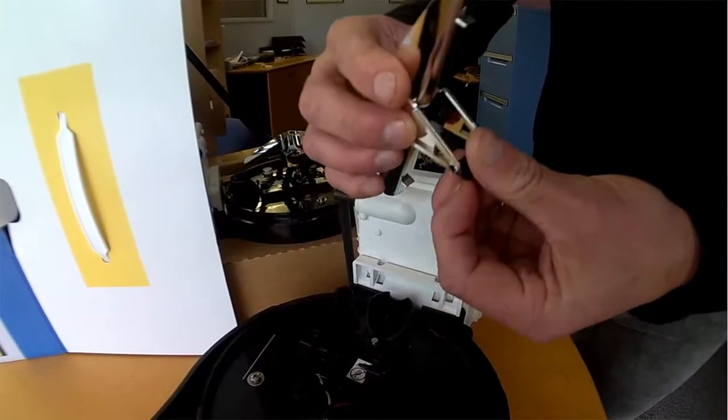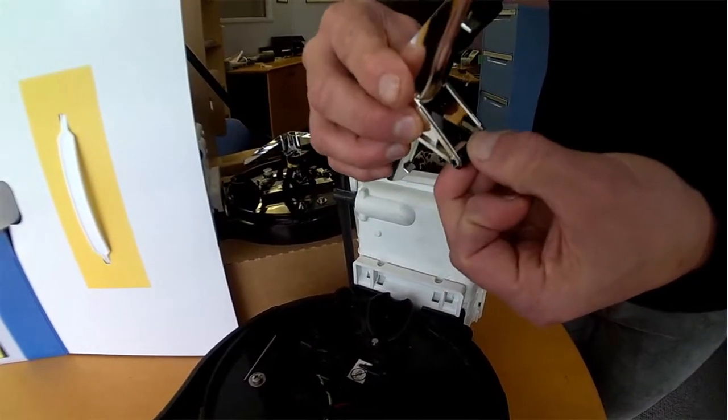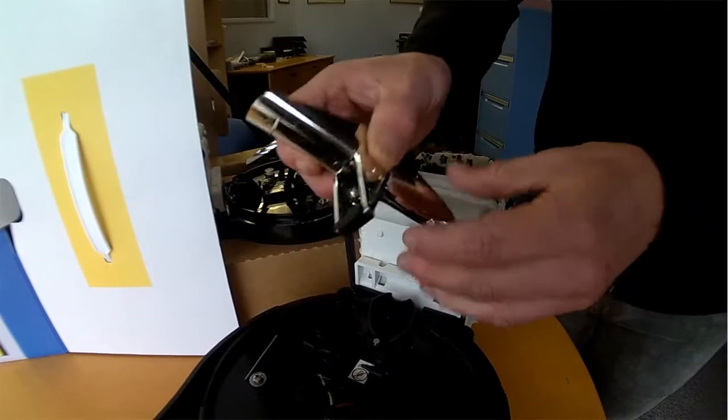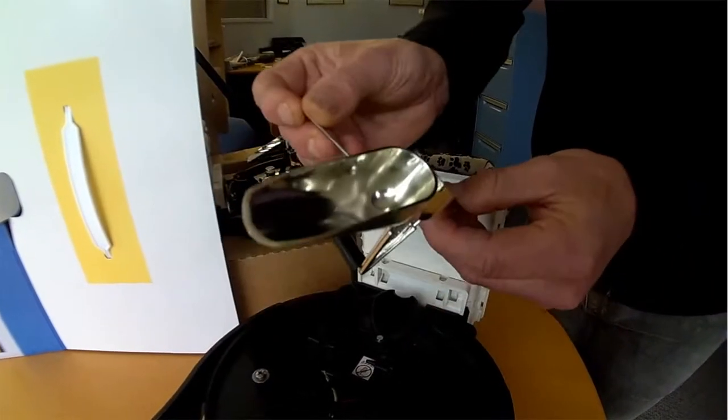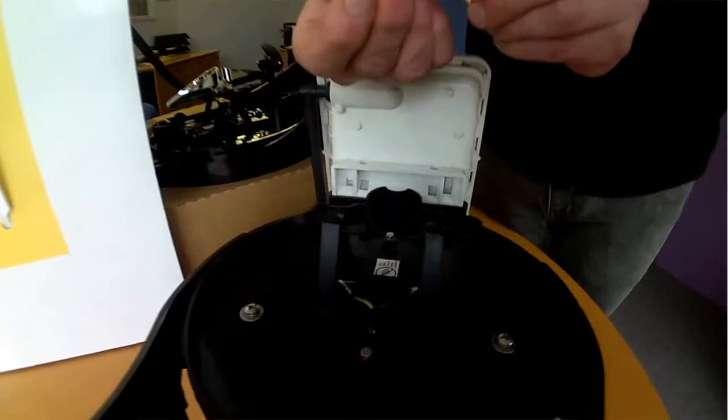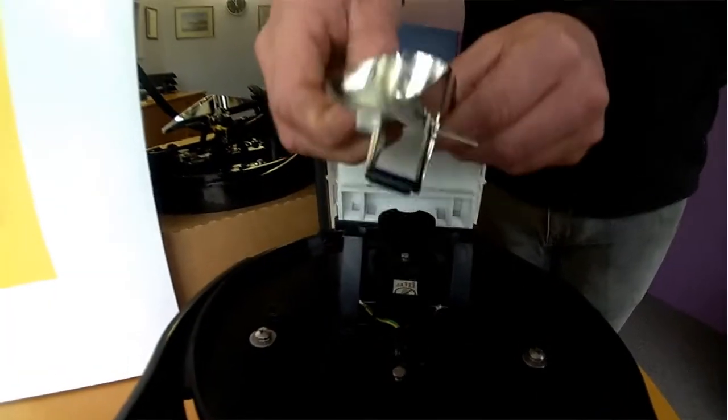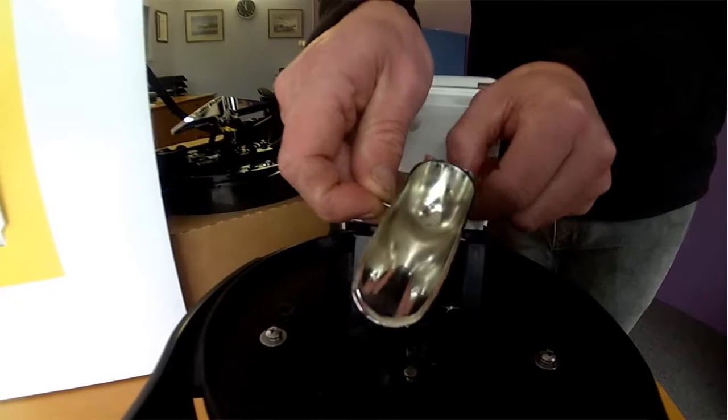Grab the spindle and put it through one side at a time, just gently pulling those arms apart to fit.